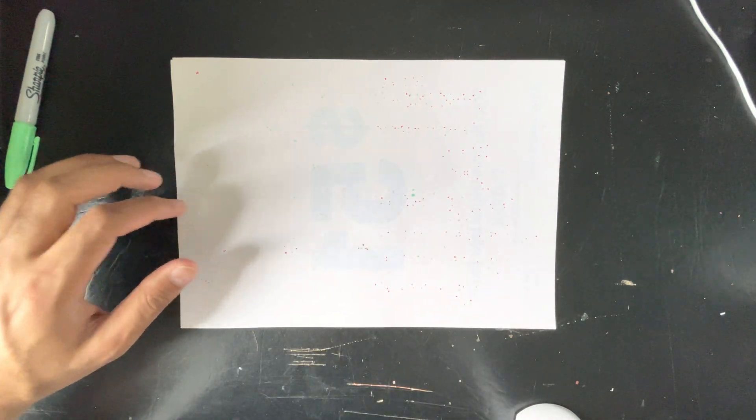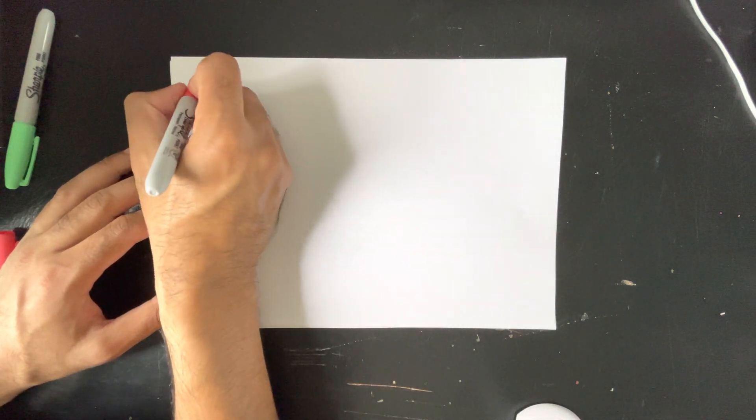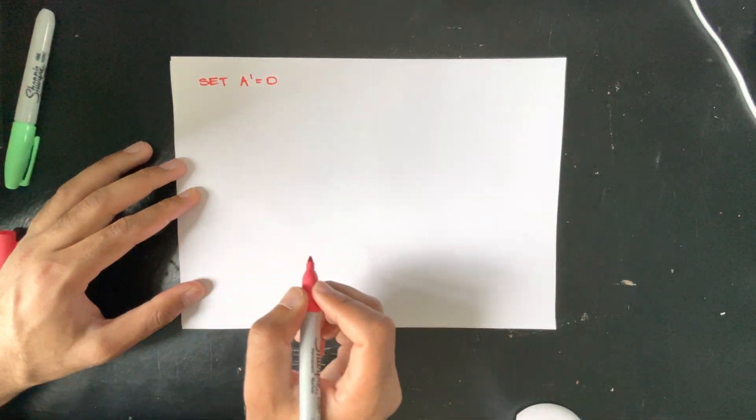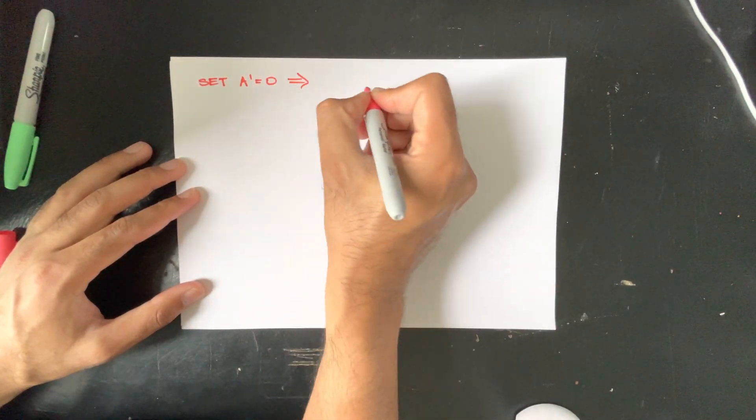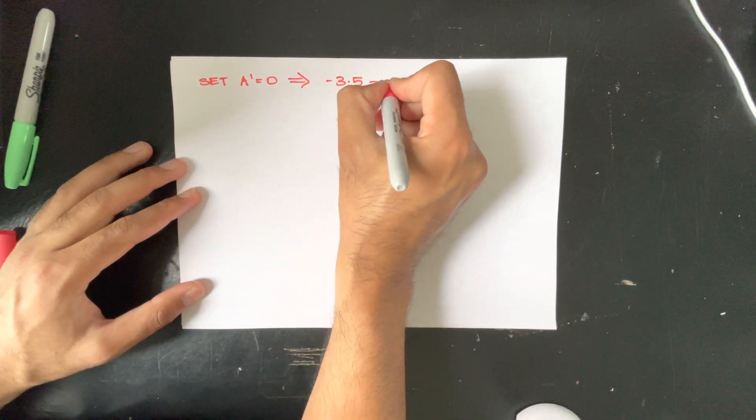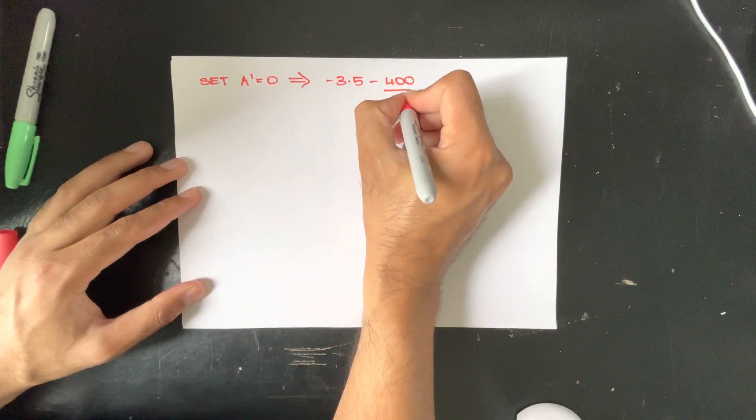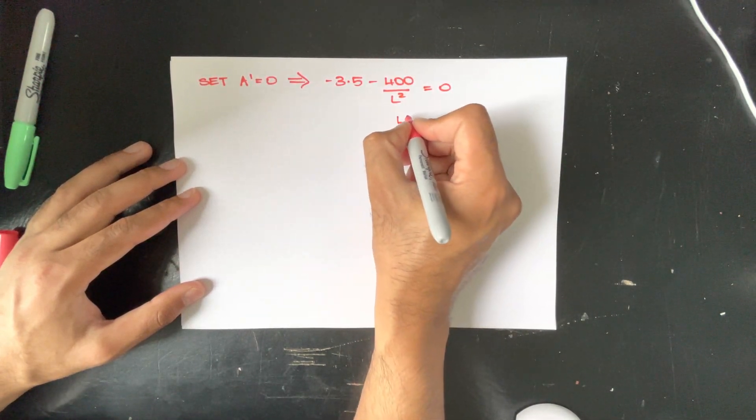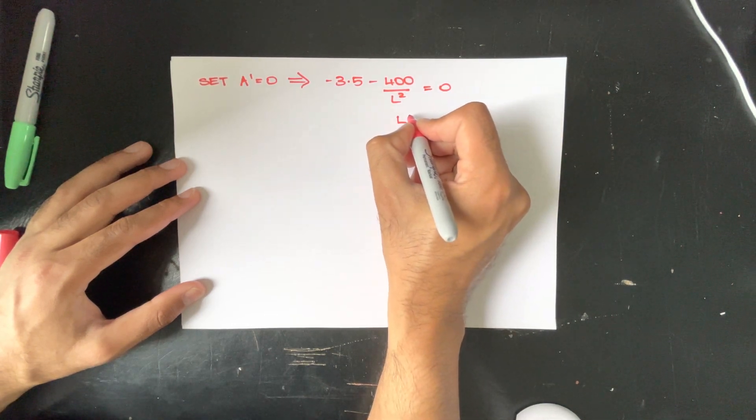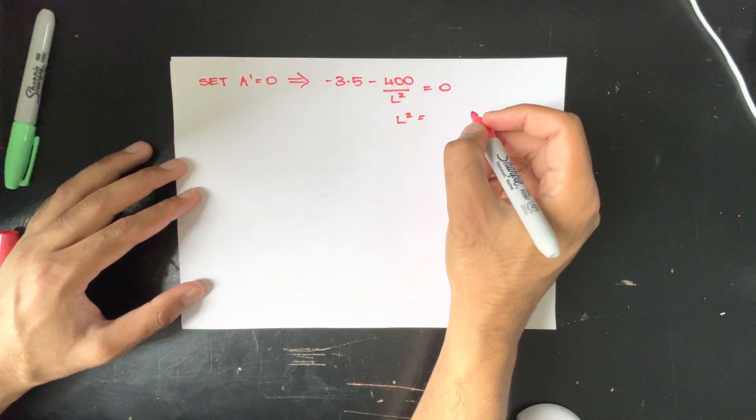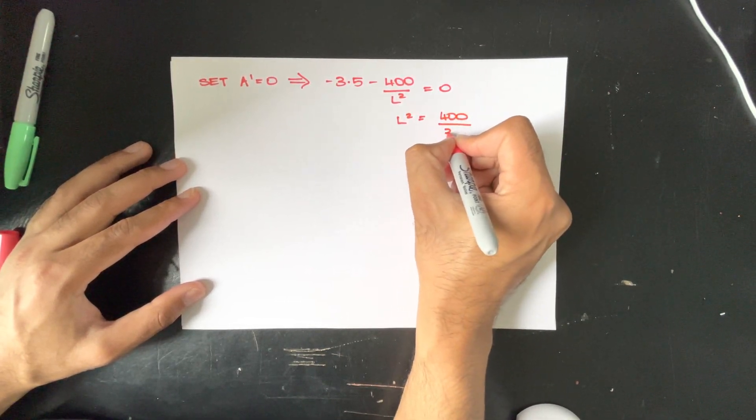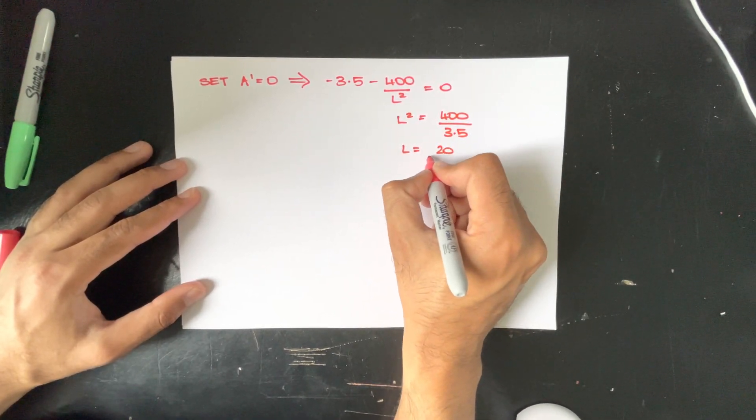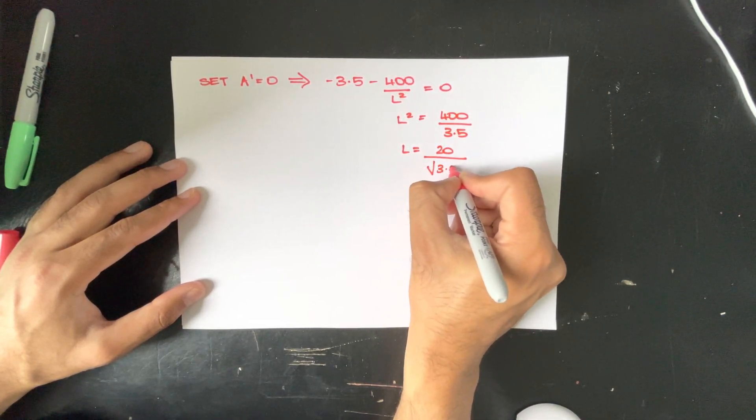That will be our next step, so let's set A dash to 0. We will get negative 3.5 minus 400 over L squared being equal to 0. So L squared will be equal to 400 over 3.5, so L will equal to 20 divided by square root of 3.5 and that would be its length.